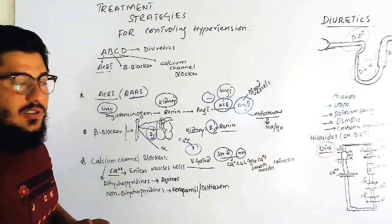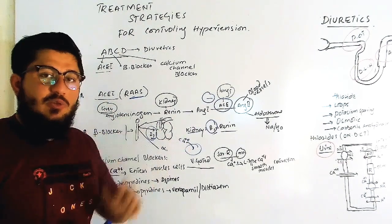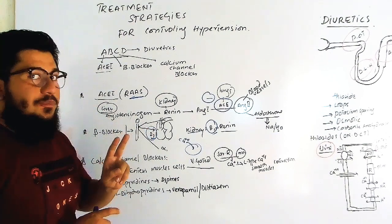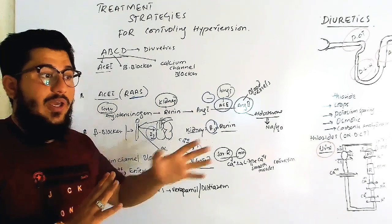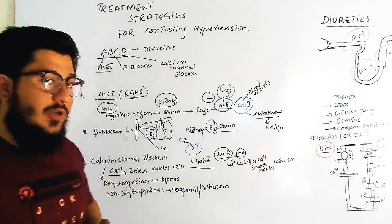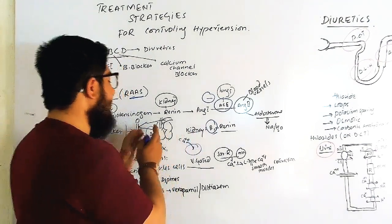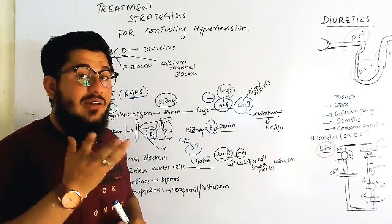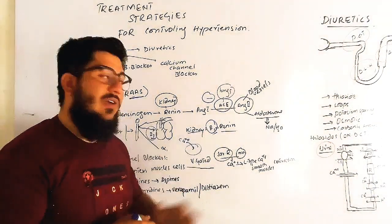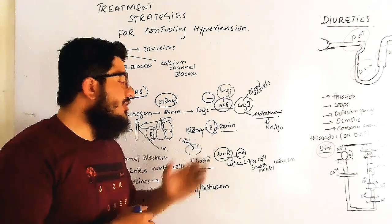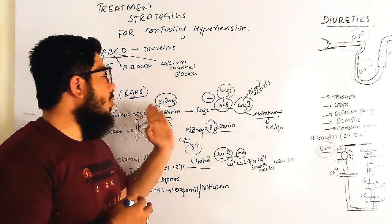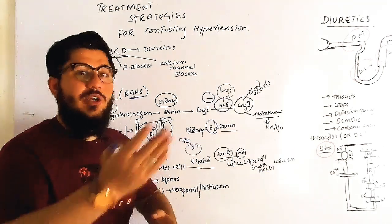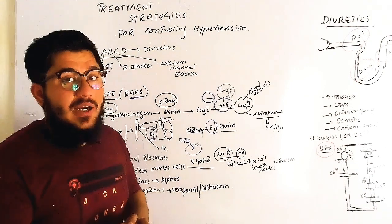Next are beta blockers. Beta blockers block beta receptors, especially beta-1 receptors. There are two specific areas involved in blood pressure control: the heart and the kidney. In the heart, beta-1 receptor stimulation increases cardiac contractions. In the kidney, beta-1 stimulation causes renin release, which triggers the RAS cascade — converting angiotensinogen to angiotensin-1 to angiotensin-2 — causing vasoconstriction and aldosterone secretion, leading to sodium and water reabsorption.